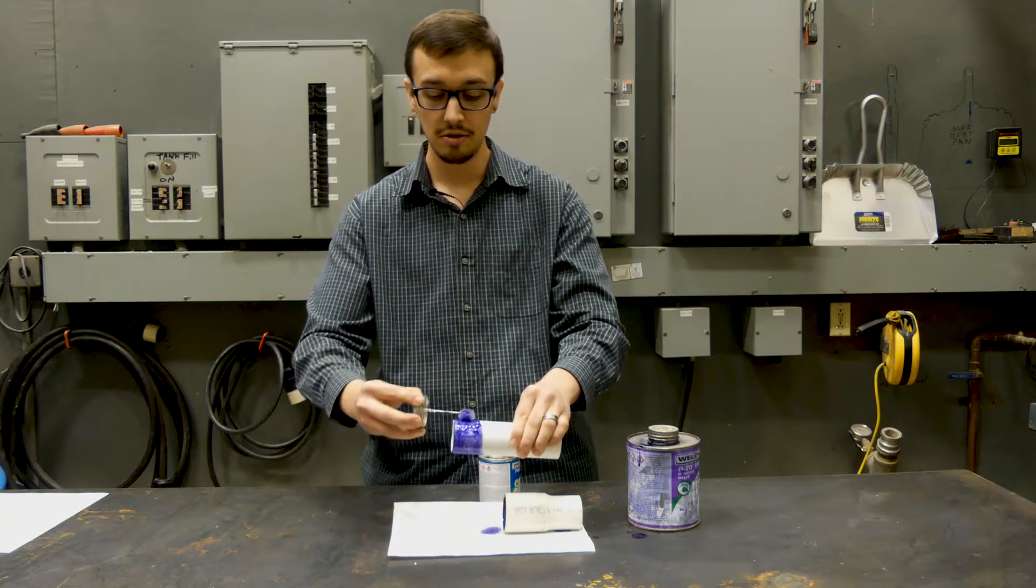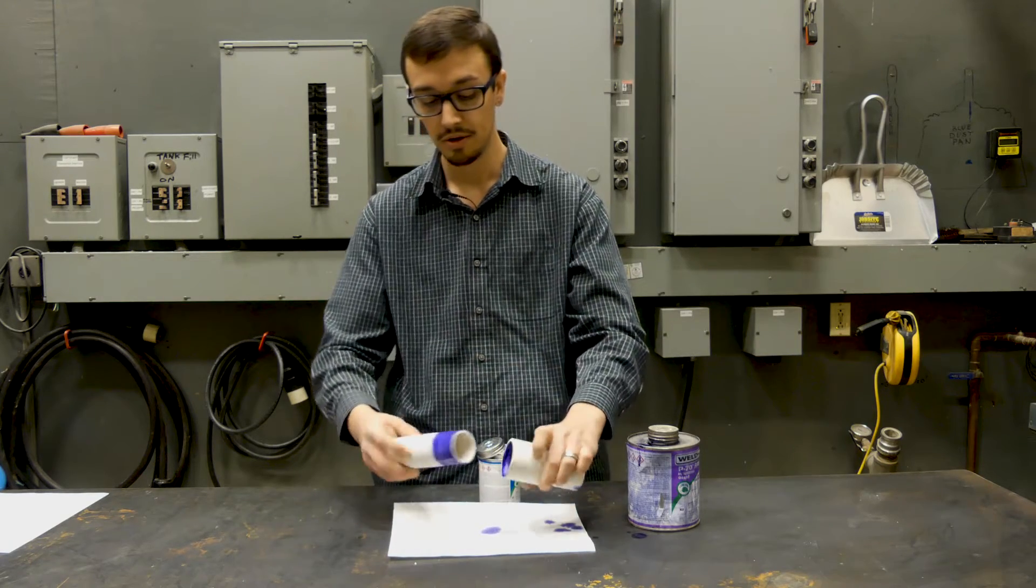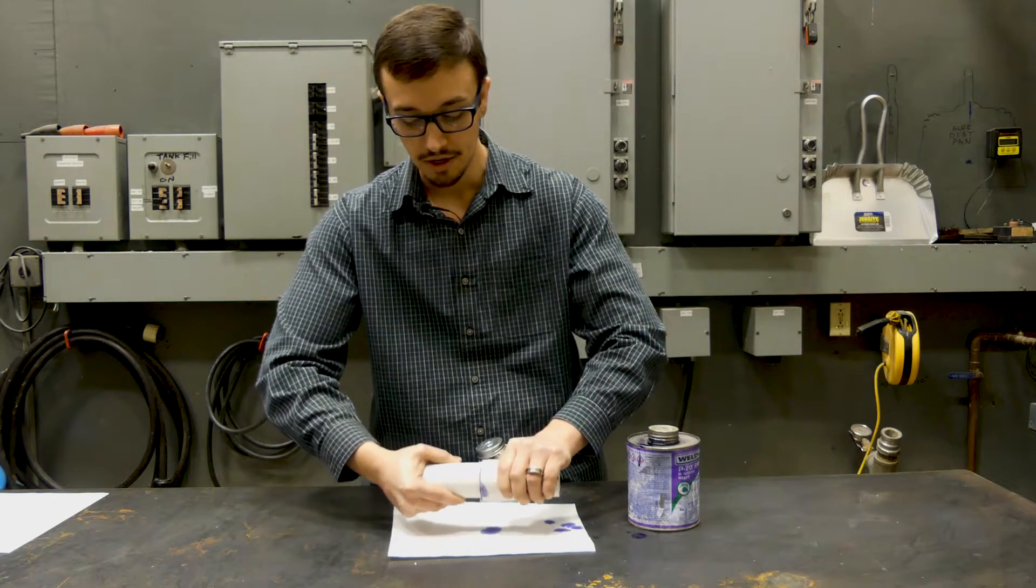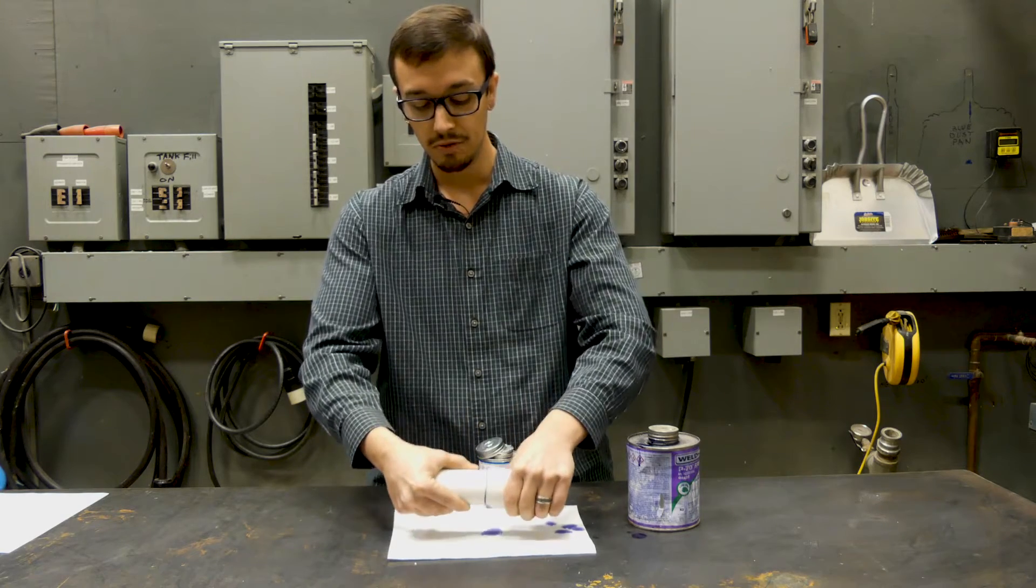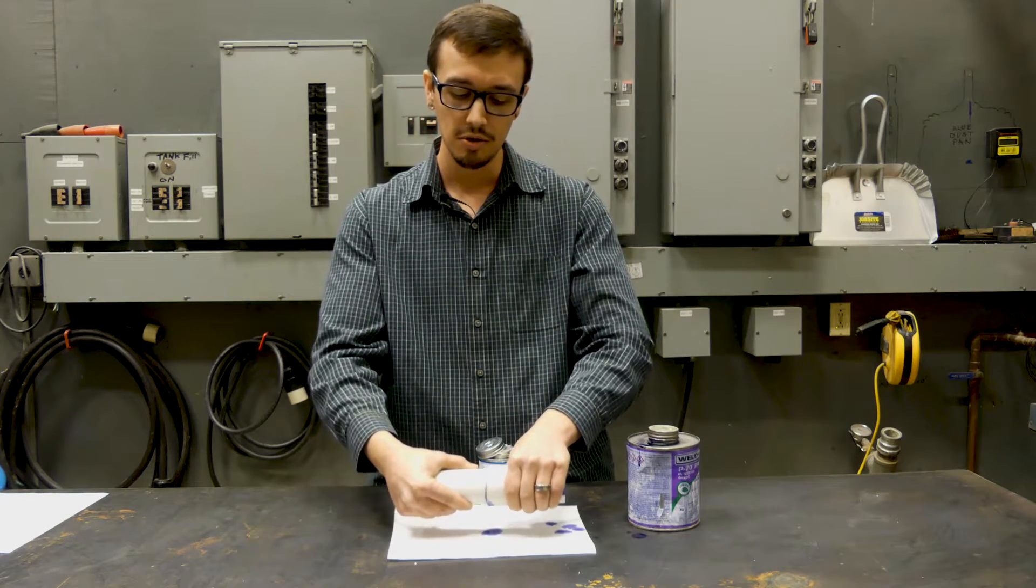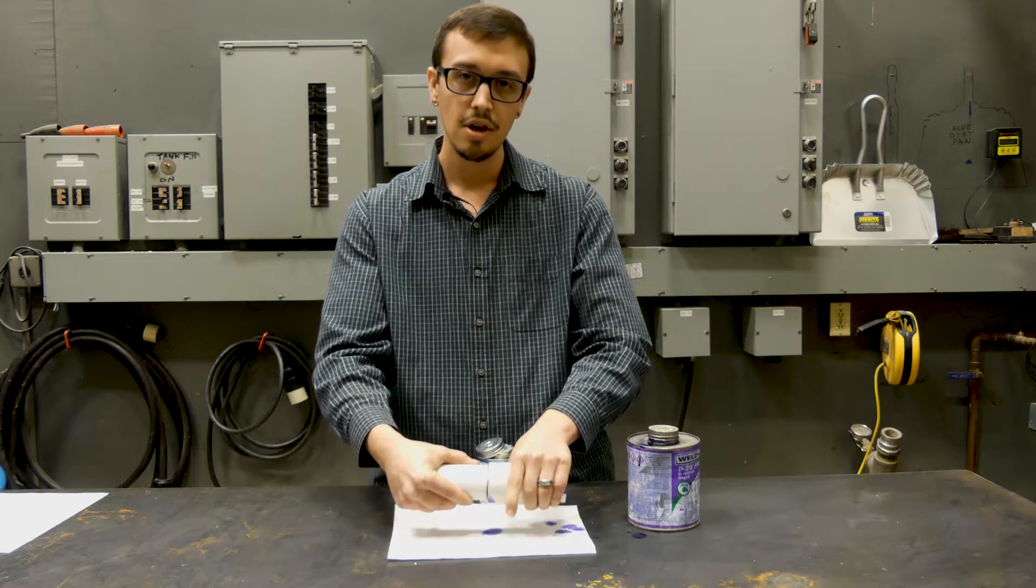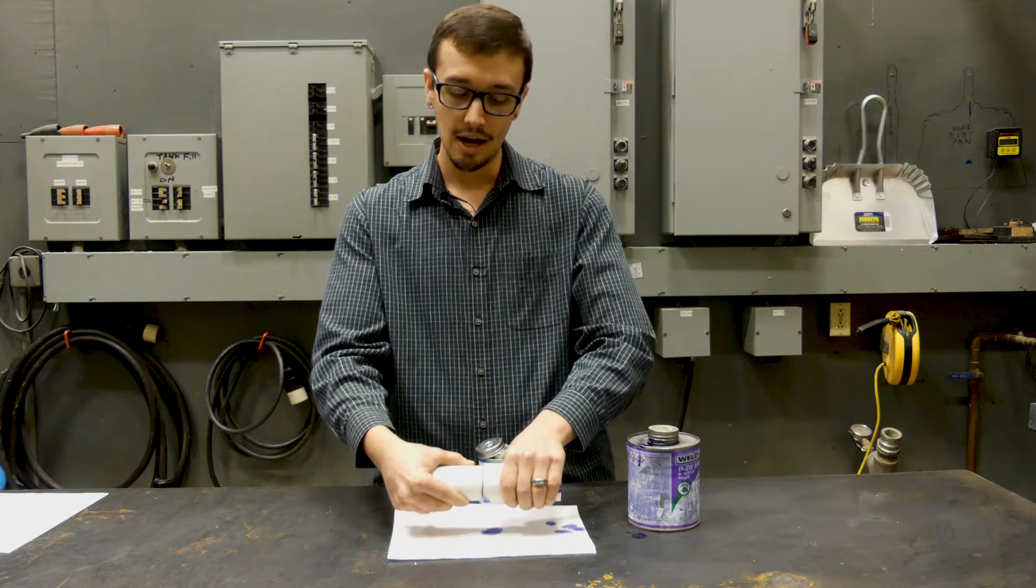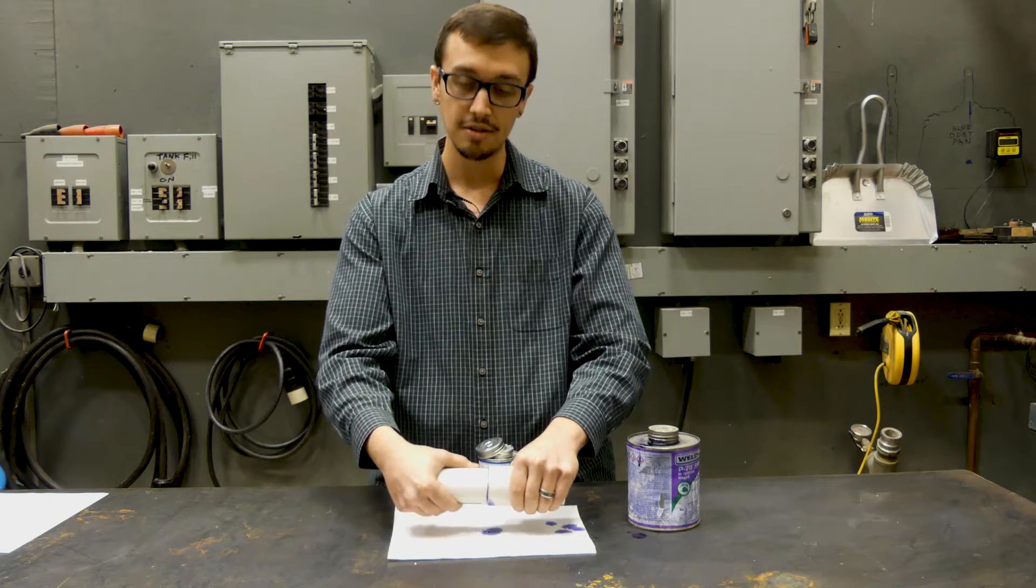And it's important that you do this part really quickly because this cement when it's exposed to air dries really quickly. You want to insert the fitting all the way and give it about a quarter of an inch to an eighth of an inch of rotation. Then you want to hold it firmly for a good 30 seconds to ensure that it stays in there properly and doesn't back out on you. You want to make sure that that thing is seated as far into the fitting as it will go.